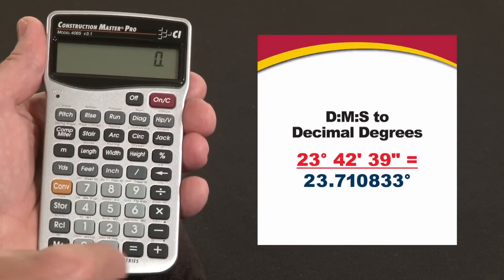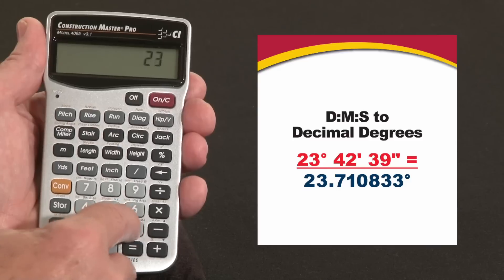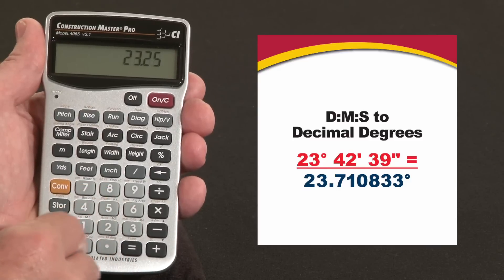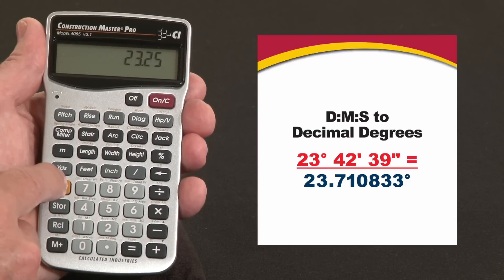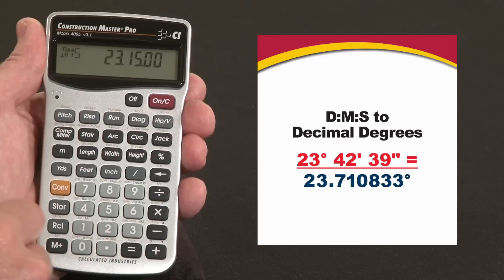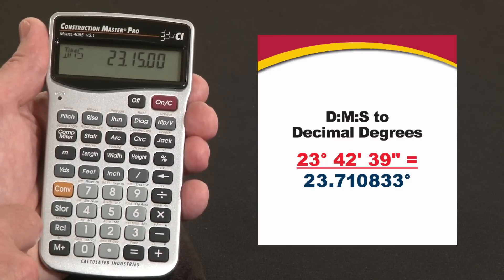If you've got a set of plans that says something like 23.25 degrees, what is that in DMS? Convert decimal point, it's 23 degrees, 15 minutes, and no seconds.